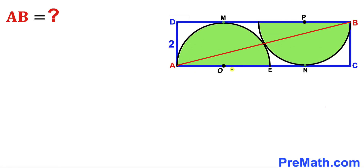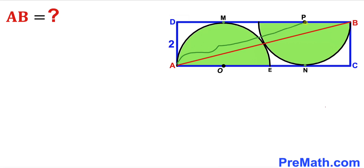Welcome to PreMath. In this video we have two identical semicircles fully inscribed in a blue rectangle, where O and P are their centers, M and N are their points of tangency with the blue rectangle, and they are tangent to each other. AB is the diagonal of the blue rectangle, and the side length AD is two units. Our task is to calculate the length AB.